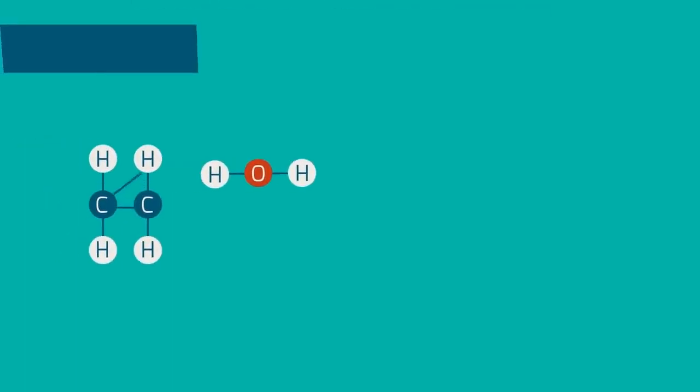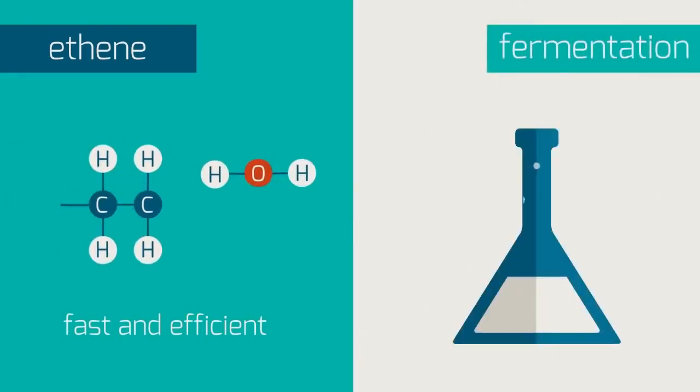The ethene route is faster and more efficient as there is no waste product formed, only the useful one. Fermentation also yields carbon dioxide, which isn't useful to us.